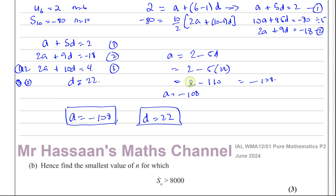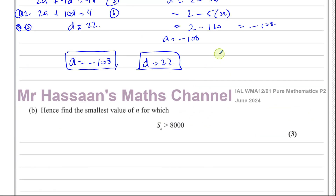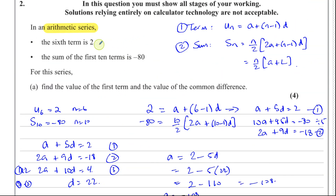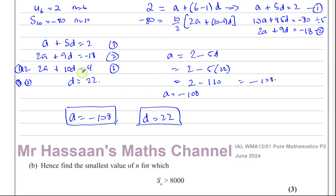Initially I was hesitant because I'd assumed the common difference would be negative, but it doesn't have to be — the sixth term is only 2 and the sum of the first 10 terms is negative 80, meaning lots of terms are negative, which makes sense. We can verify: a plus 5d equals negative 108 plus 5 times 22 equals negative 108 plus 110 equals 2. That's correct — the sixth term is 2.